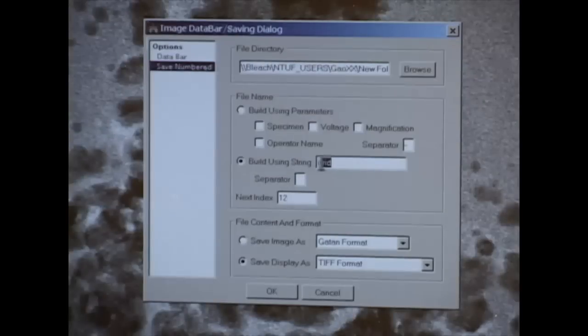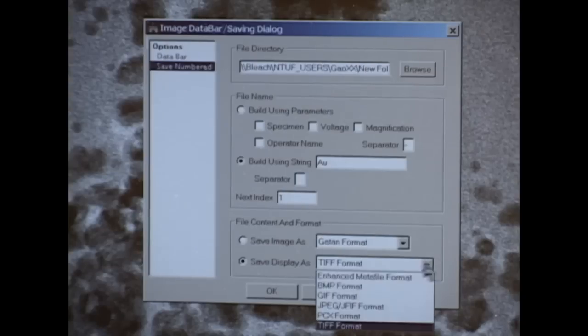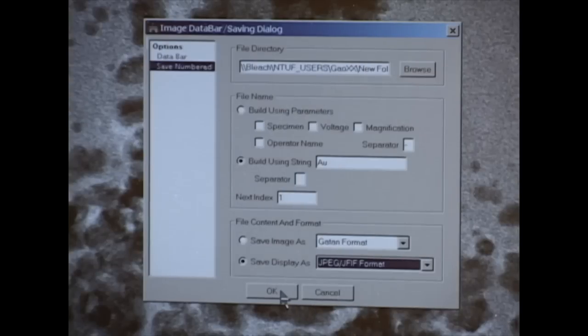select Build Using String, and type in a base file name and an index number. You can choose the default GATAN format or TIFF or JPEG formats.